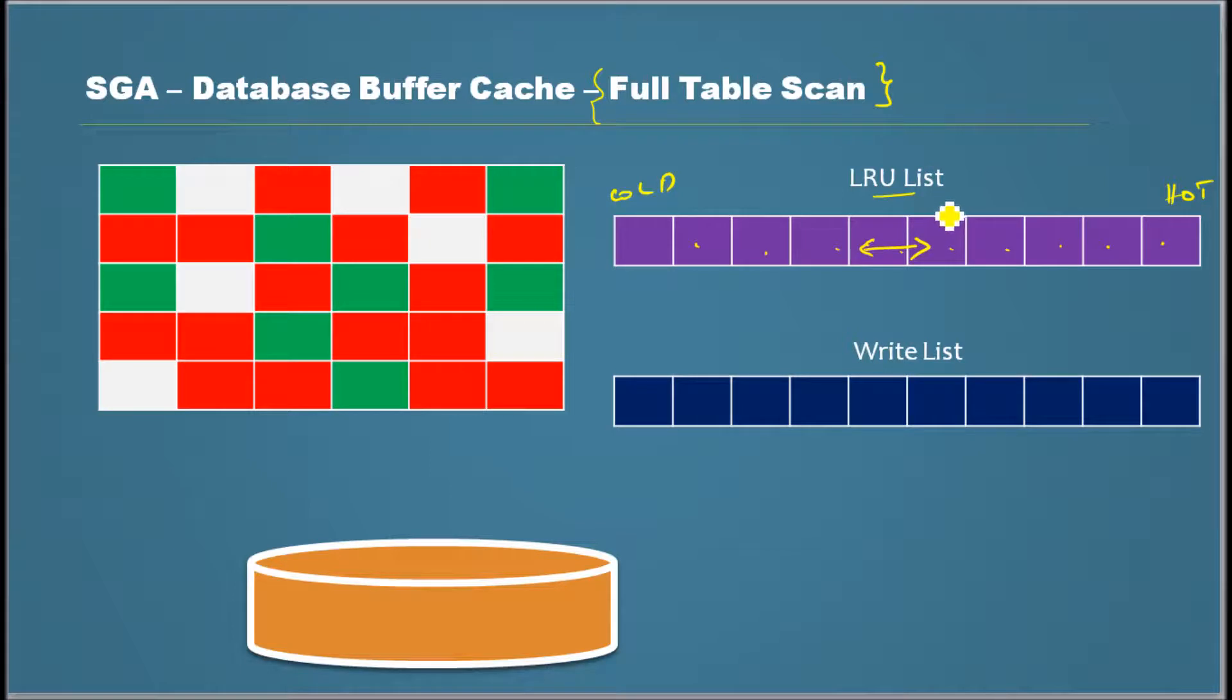So what will happen in that situation? In that situation, any other data which could still be accessed frequently by other programs would have to move out of the LRU list.